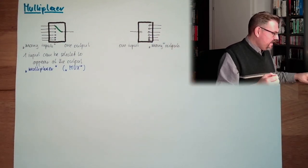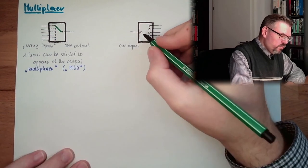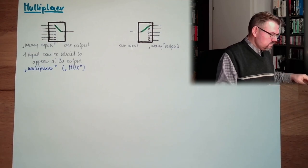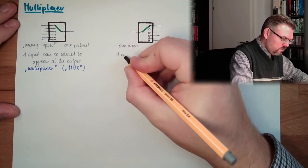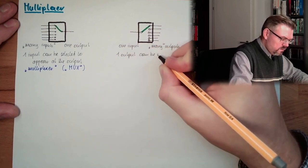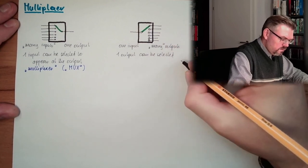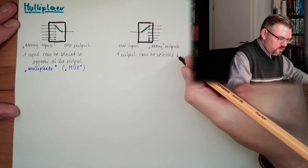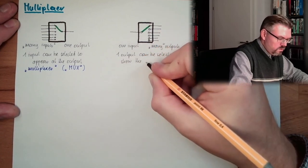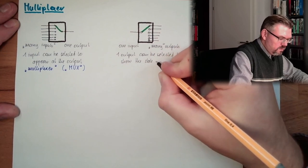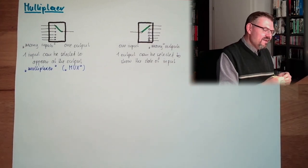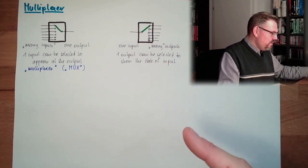And here we have many outputs. And here, I can select at which output the input shall appear. For instance, this one. One output can be selected to show the state of the input. And this thing here is called demultiplexer.